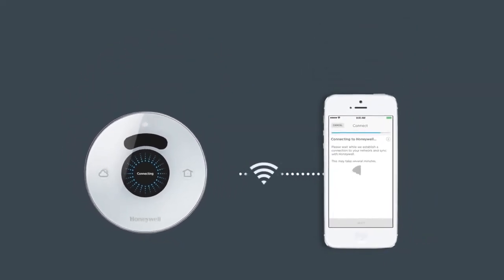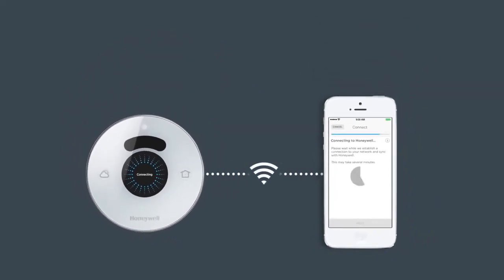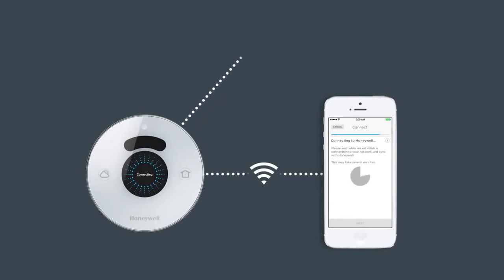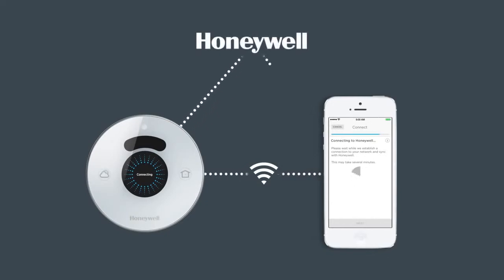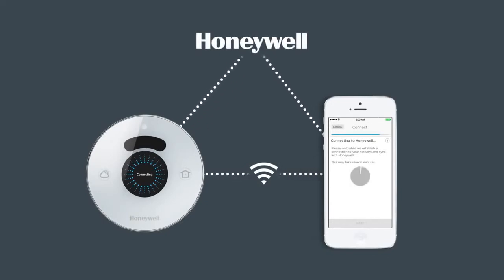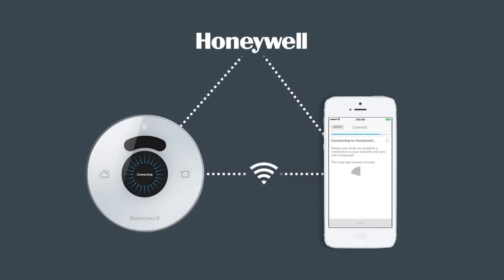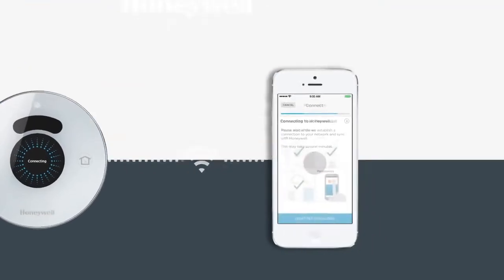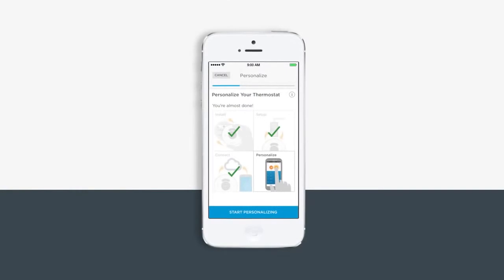It may take several minutes to establish a connection to your network and sync with Honeywell. If an error appears on your thermostat screen, touch 'Connect' again to re-establish the connection.